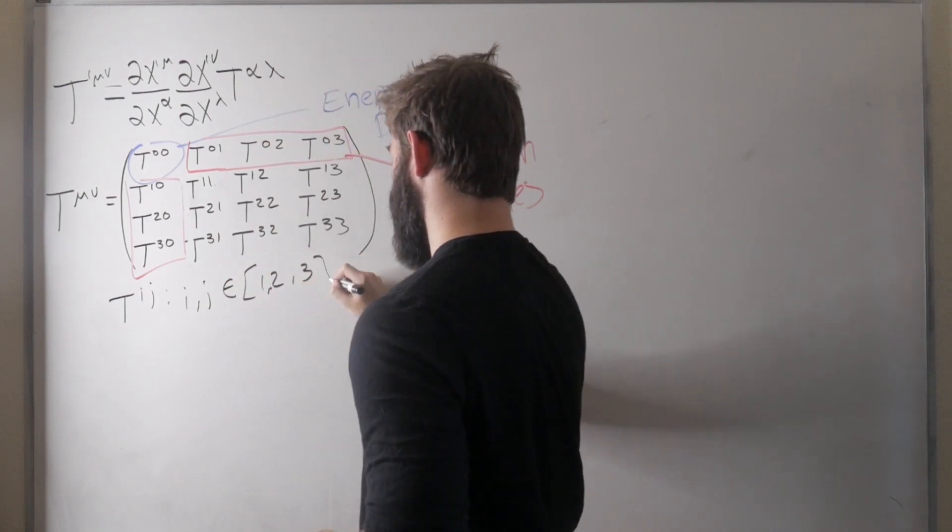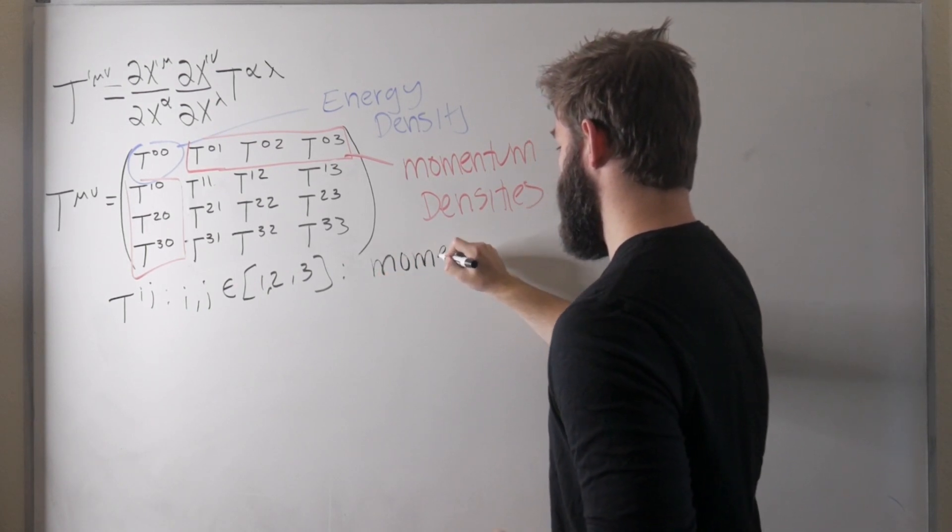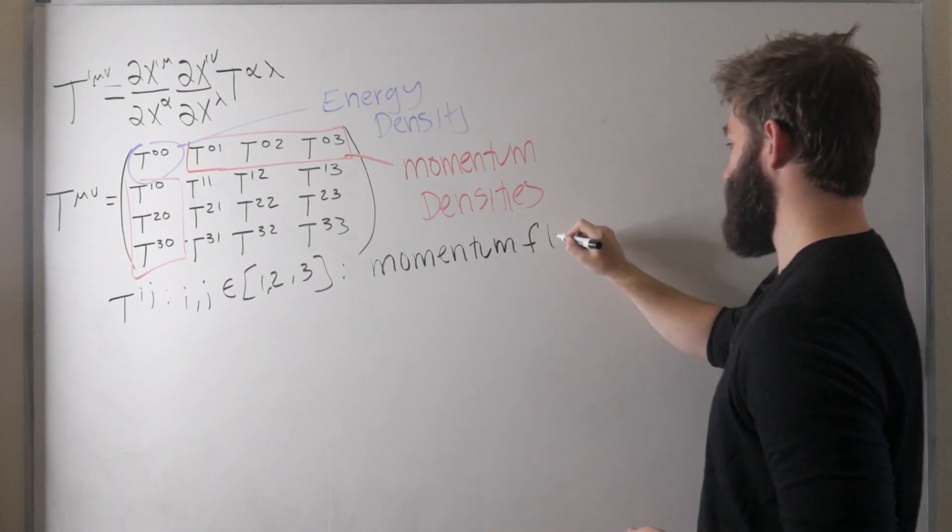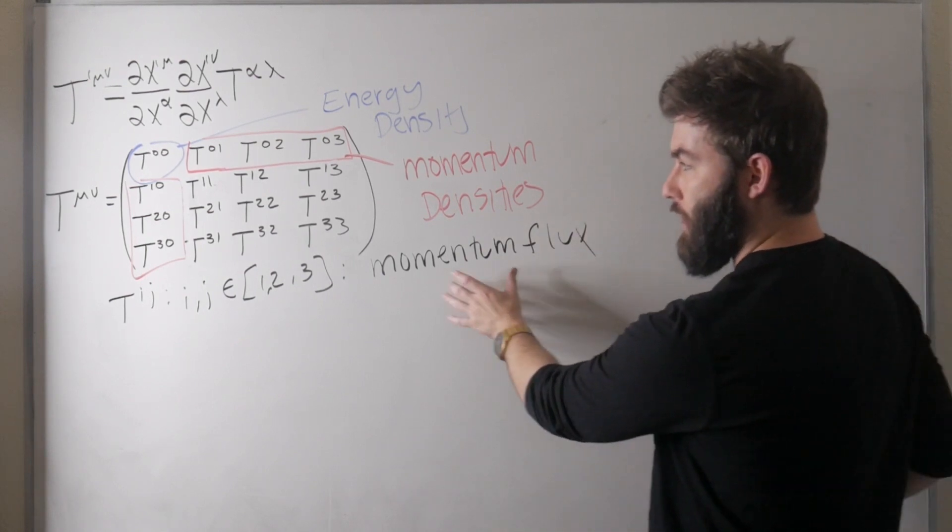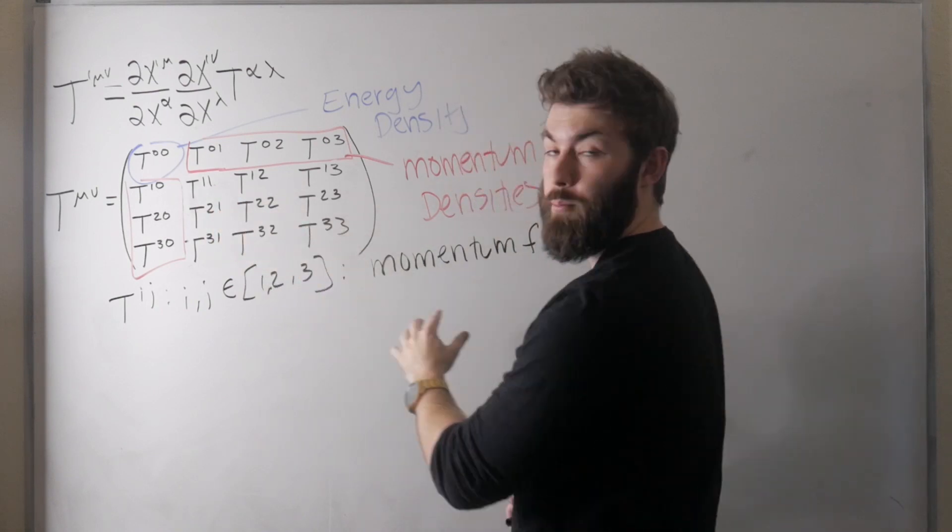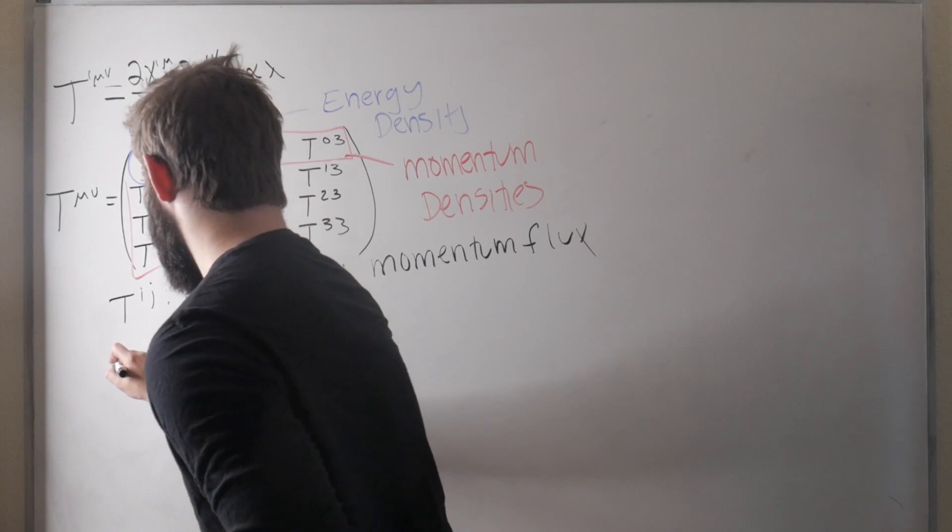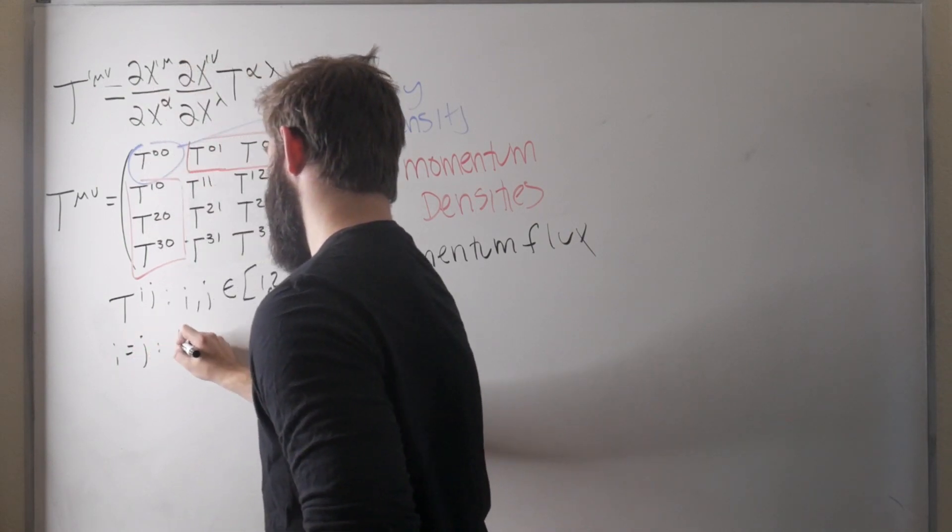That has a name and it's called momentum flux. And for the momentum flux it's split into two different categories the diagonal terms which are pressure and the off diagonals which are shear stress. So for i equal to j that's pressure.